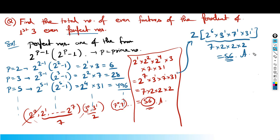Very good question. This is a nice concept involving factors and perfect numbers. A perfect number is of the form 2^(p-1) × (2^p - 1), where p is prime, and the sum of all its factors equals double that number.